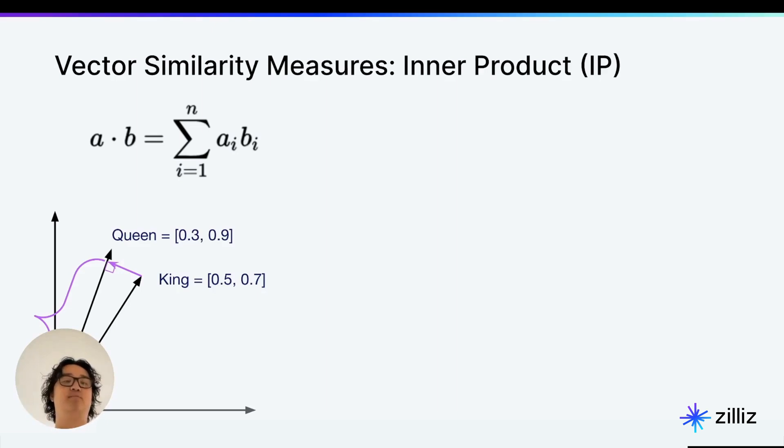This is essentially done by saying, okay, let's take the sum of the product of the individual vector's dimensions.